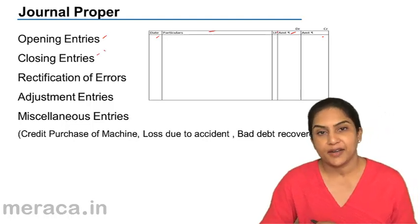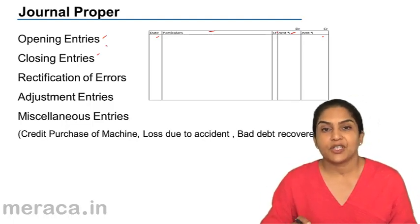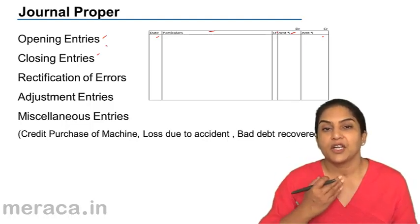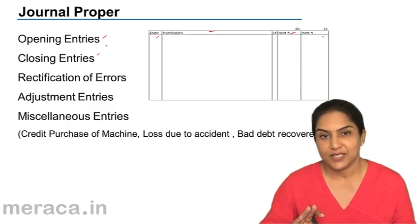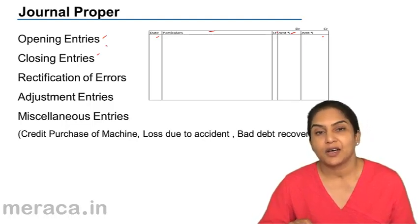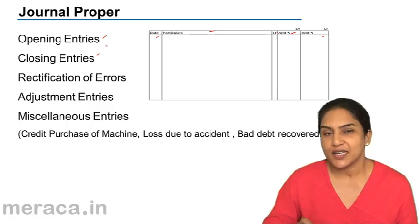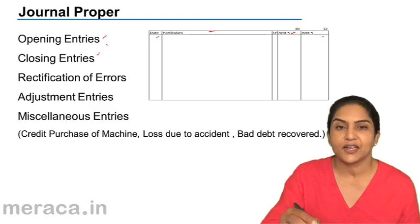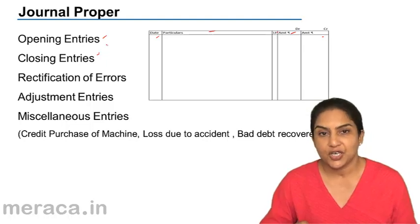Similarly, we have closing entries. What are closing entries? Expense and income accounts are closed by transfer to the profit and loss account. So we have profit and loss account debit to rent, to salaries, to all other expenses. Similarly, incomes are taken to the credit side of the profit and loss account, or sales is taken to the credit side of the trading account. These closing entries cannot be recorded in any of the other books, so they are also recorded in the journal proper.